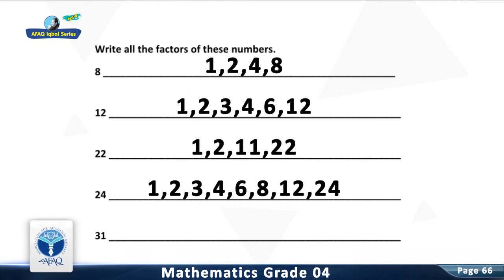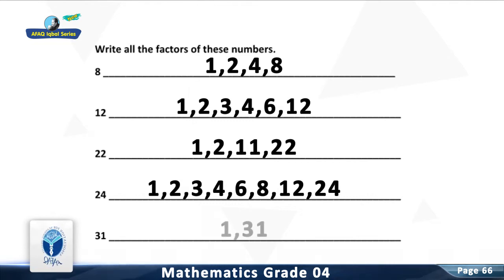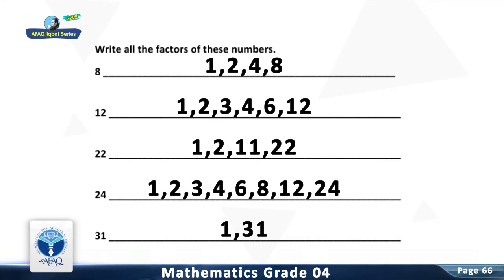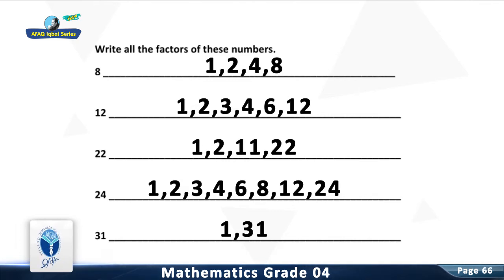Question 5: Write all the factors of 31. You are right. 31 is a prime number. It has only two factors: 1 and 31.